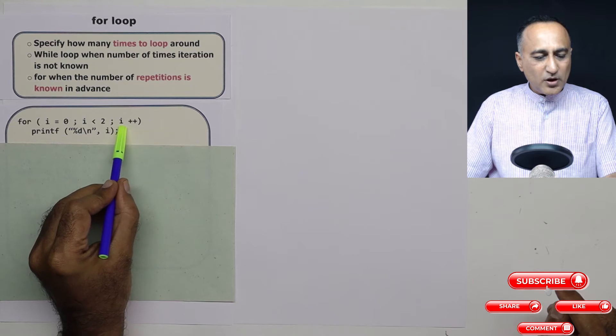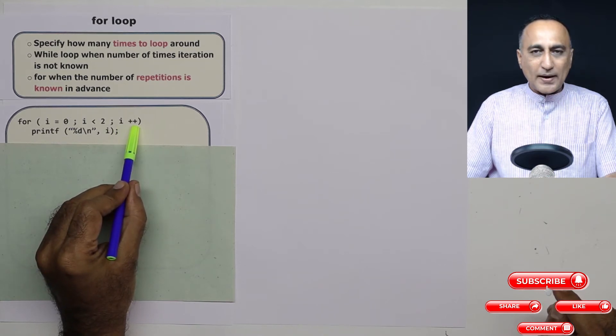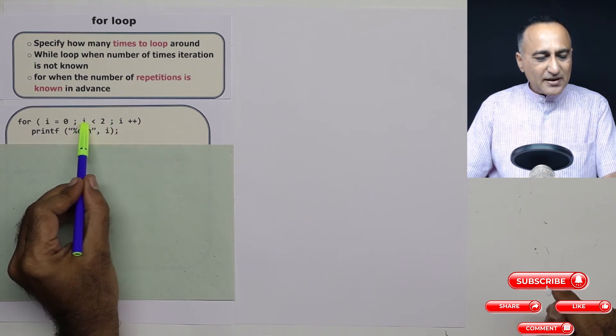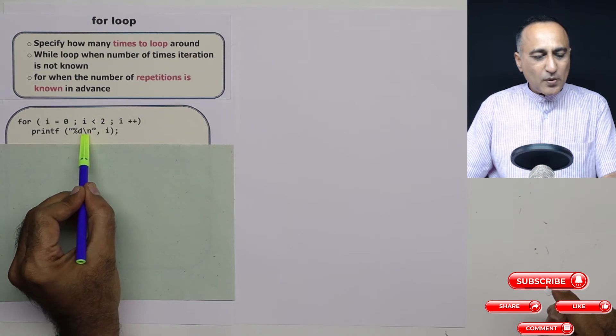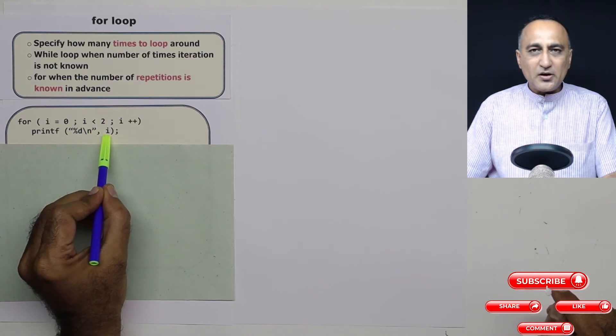After it prints zero, it will go here. It will do the increment. From zero, i becomes one. Once it does the increment, it will go back here. One is less than two is still true. So it will print the value of i which happens to be one.